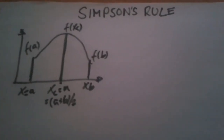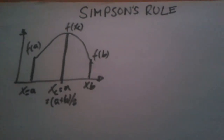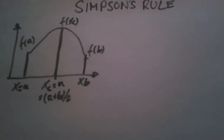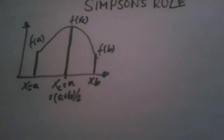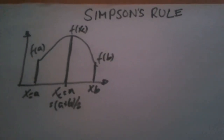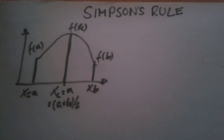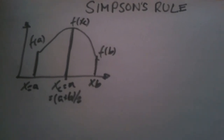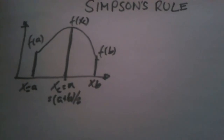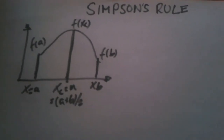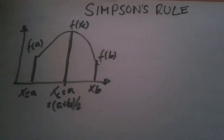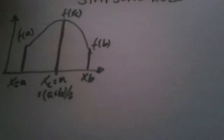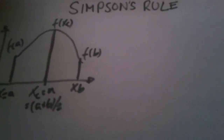Hi guys, this is a new video on introduction to parallel programming. We're still talking about trivial parallelism and integration. Let me introduce a new rule for a better and more precise integration — this is called Simpson's rule. This is an even more precise method than the trapezoidal method that we saw in the last video.